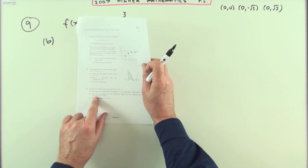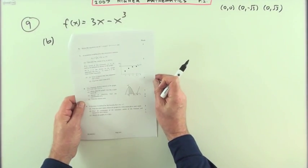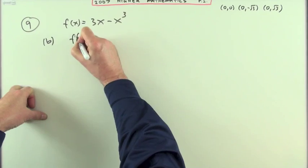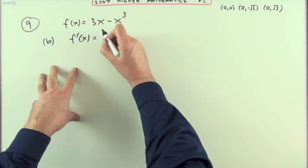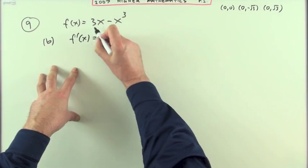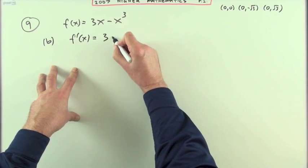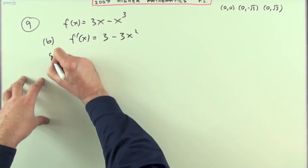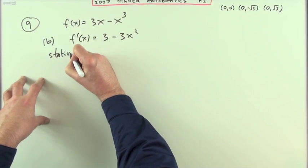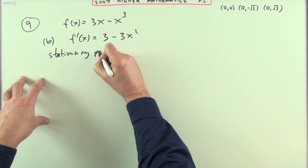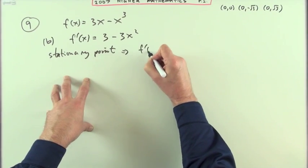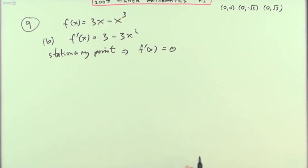Part b, find the coordinates of the stationary points of that function and determine their natures. Well, let's do it. Let's differentiate. Differentiate that so it's multiply by the power to 1 of the power. That linear term will just go down to 3. Multiply by the power 3. Take 1 of the power 2. And then make a statement. Don't forget to do that. You've got a stationary point. Or you can get away with an abbreviation if you like. If the derivative ever equals 0.